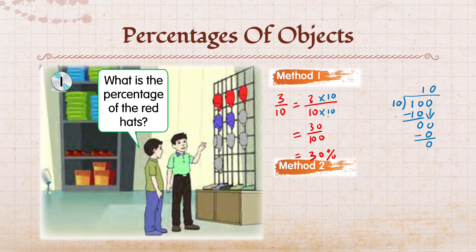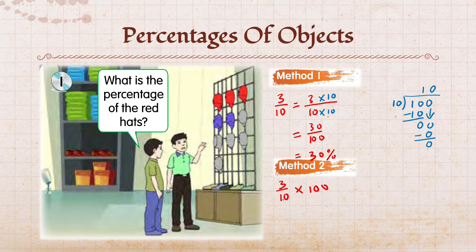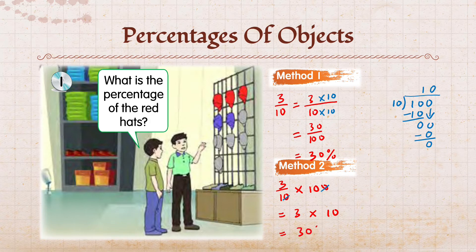Method 2. Cara kedua. Sama juga, kita tulis pecahan untuk topi yang berwarna merah: 3 over 10. Kemudian, kita darab dengan 100. Cikgu akan guna kaedah potong. Di sini ada sifar, di sini pun ada sifar, jadi kita boleh potong sifar tersebut. Sekarang nombor bahagian bawah sudah jadi satu. Kita boleh darab nombor atas dengan nombor yang tinggal: tiga darab sepuluh, kita akan dapat 30 peratus.